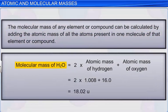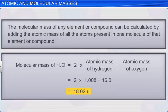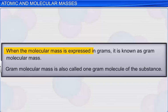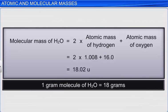For example, the molecular mass of water will be the atomic mass of two atoms of hydrogen plus the atomic mass of one atom of oxygen, which is 18.02U. When the molecular mass is expressed in grams, it is known as gram-molecular mass. Gram-molecular mass is also called one gram-molecule of the substance. For example, one gram-molecule of water is 18 grams.